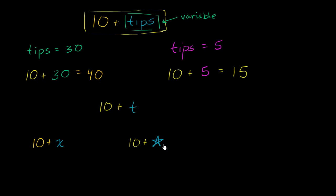But hopefully this gives you a general idea of just what a variable is. All it is is a symbol that represents varying values. And that's why we call it a variable.